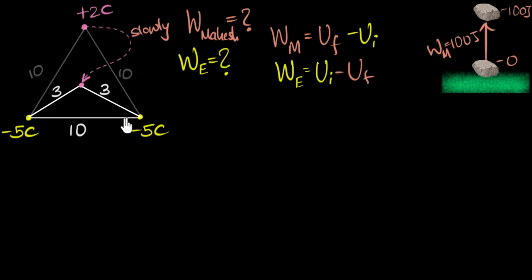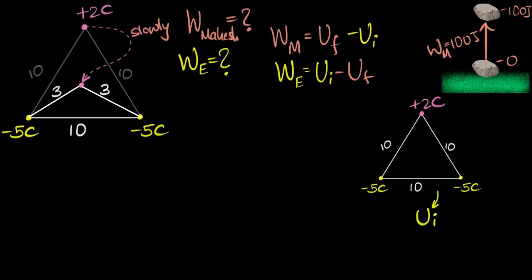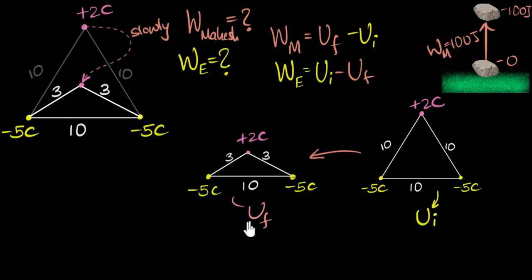So all I have to do now is think about what was the initial potential energy of the system, what is the final potential energy of the system, and then we can figure out the work done. I encourage you to pause this video and try it yourself. Let me draw what the initial system looks like — 10 meters far away from each other. Then once I did that work, the final system looks like this. You may be curious about the path taken — it doesn't matter, because electric fields are conservative fields. All that matters is the initial state and the final state; the work done is path independent.